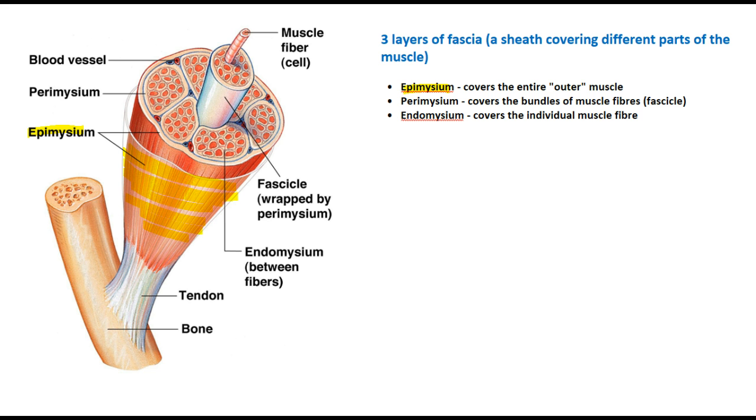Our perimysium covers our bundles of fibers, so it wraps around each one of these bundles and we've got an example of that sitting up here as well. The last of these sheaths is the endomysium and it covers each individual muscle fiber. So it covers through here and would wrap around each one of those.